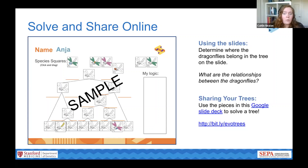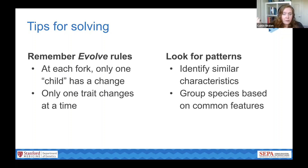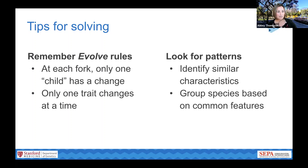While you're solving, we have some tips to help you along the way. Keep in mind that the rules from the evolved tree still apply: at each fork, only one population changes, and only one trait changes in each species at a time. It really helps to look for patterns between your species to see if you can identify any relationships. We'll give you about five minutes to work on your tree. Feel free to drop any questions in the chat, and let us know when you're done.